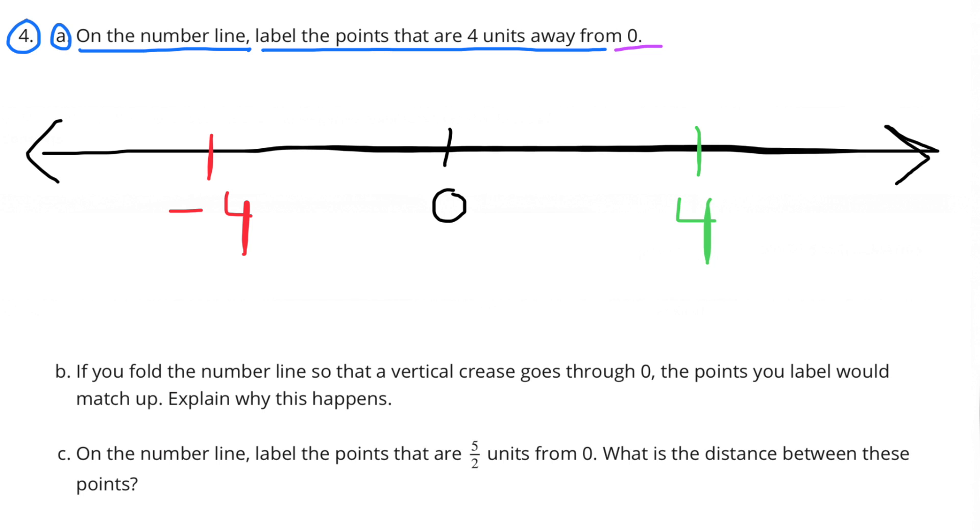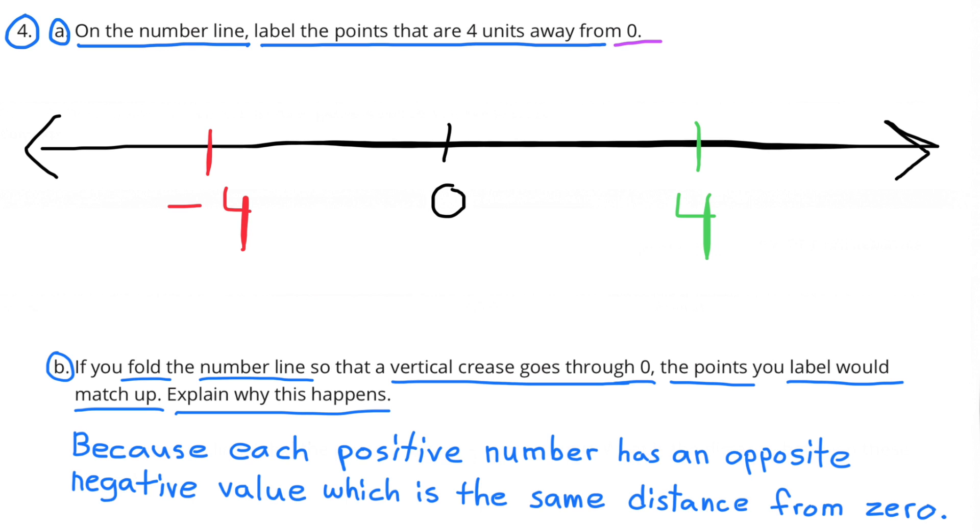I drew a number line and I put points to the right which would represent positive 4 and I put points to the left which would represent negative 4. Both positive 4 and negative 4 are 4 units away from 0.